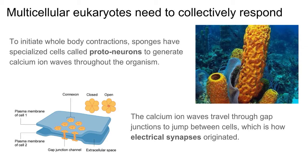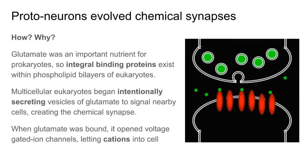What we see with these gap junctions is an electrical synapse that allows electrical stimuli to move between cells. In order to get to the point we're at with the human brain, there needed to be a point in time at which neurons would, instead of just responding to electrical impulses, respond to chemical stimuli as well. If we go all the way back to prokaryotes, they had integral binding proteins in order to allow glutamate into the cells when glutamate was around. And in eukarya, cells begin to intentionally release packets of glutamate downstream to cause activation events in the downstream neuron.